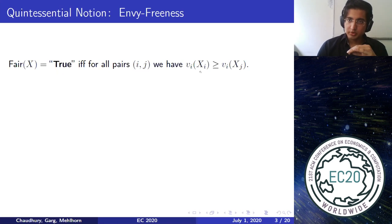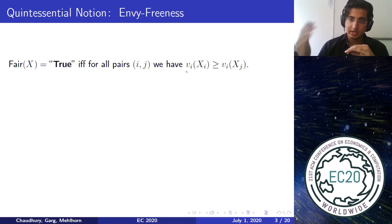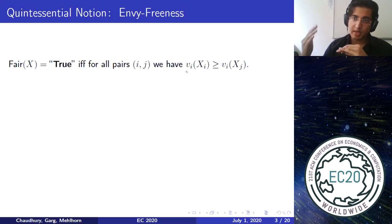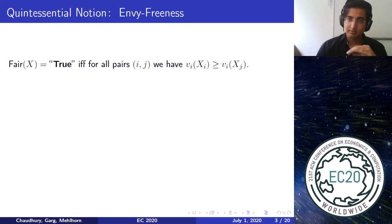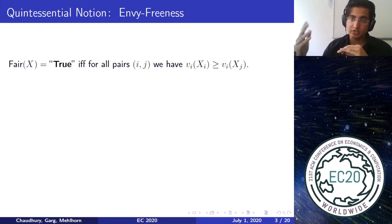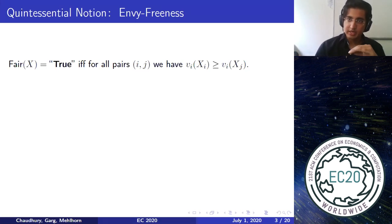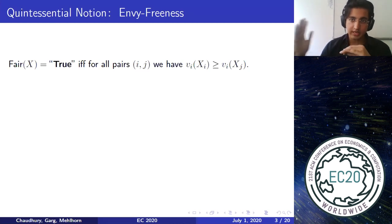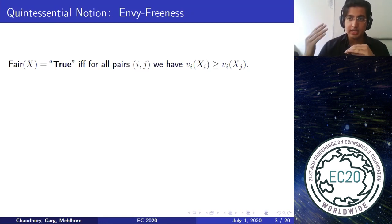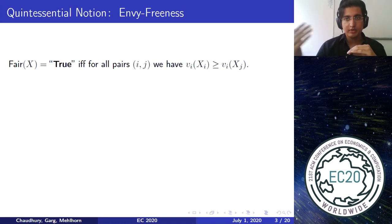An important thing to note is that both on the left and right-hand side of the inequality, we use the same valuation function V_i. Agent i doesn't care how happy agent j is — it doesn't depend on V_j(X_j). The envy exists simply because agent i feels they would have been better off with j's bundle.